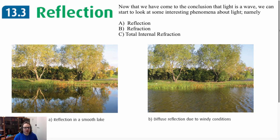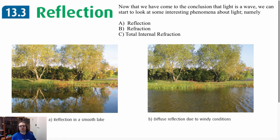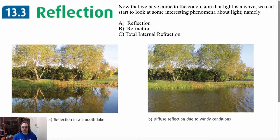Right here I have two different pictures of the same place, a lake. One is on a windy day, and one is on a still calm day. Here we see the reflection — it is perfect. Notice where the bottom of the tree is at the bottom of the picture; here, the bottom of the tree is at the top. We're going to get to why a little bit later on. This is called diffuse reflection, and this is due to windy conditions.